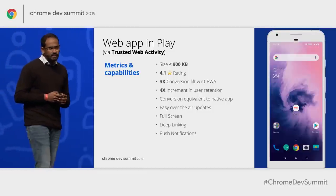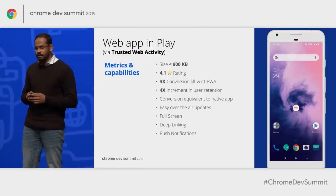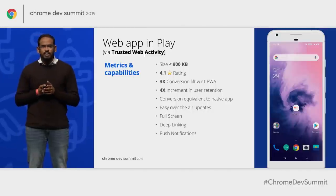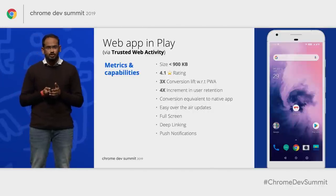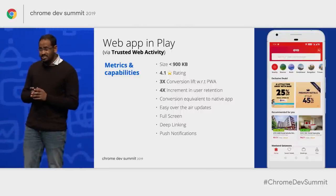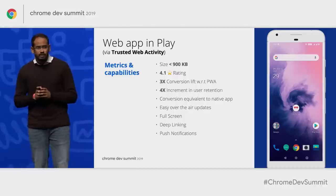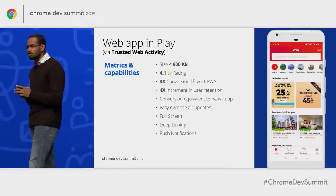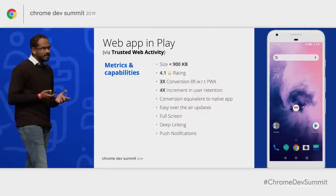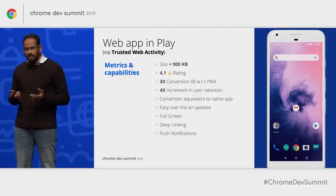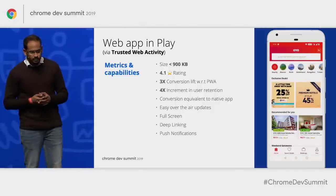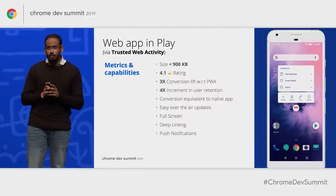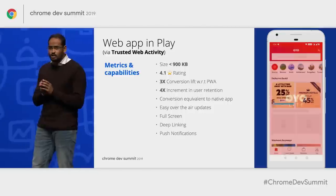Finally, this May, we released OYO Lite, built on Trusted Web Activity. It was a major breakthrough in the world of OYO Mobile Web. Users were starting to get access to OYO PWA on the Play Store, which was really cool. The numbers have been incredible — we have a similar rating on OYO Lite as compared to our native app. This showcases the importance of core capabilities like low size, easy over-the-air updates, deep linking support, and full screen. Overall, we saw a conversion lift of 3x compared to PWA, and our conversion was similar to the native app.